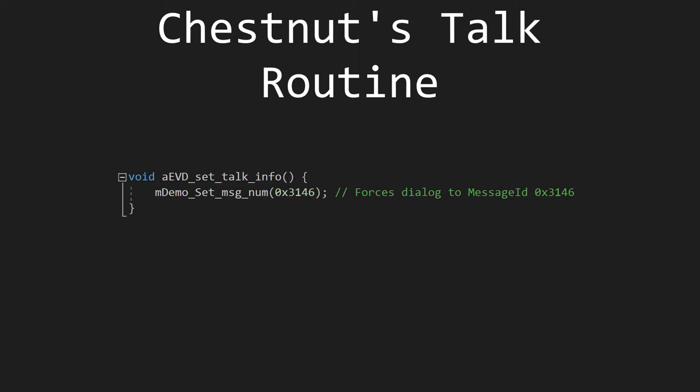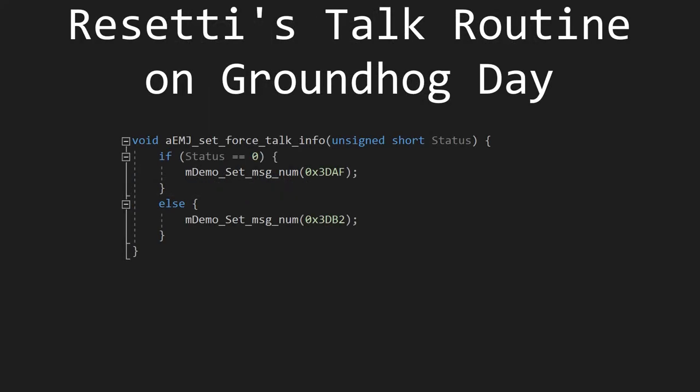Just for comparison, let's take a look at someone who has a slightly more complex talk routine. Resetti's Groundhog Day talk routine takes a two-byte value to determine which dialogue he should say. If the value is equal to zero, he'll say the dialogue for message ID 0x3DAF; otherwise, he'll say the dialogue for 0x3DB2.